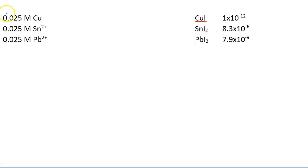Imagine that we have an aqueous solution that contains 0.025 molar copper-1, tin-2, and lead-2 ions, and that we're going to add iodide to this solution. Iodide would precipitate out all three ions, and we have the Ksp values here. The question is, in what order will the ions precipitate?